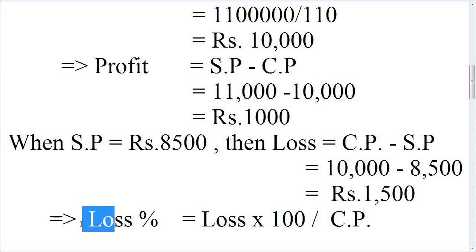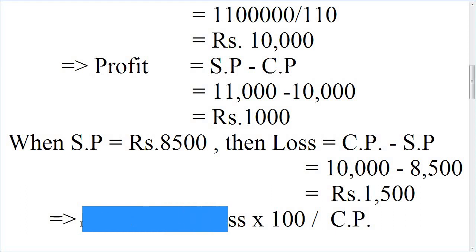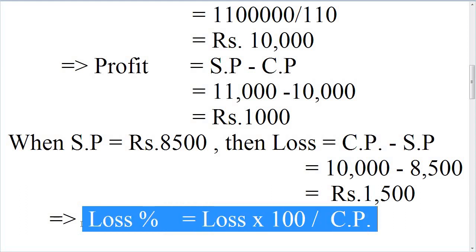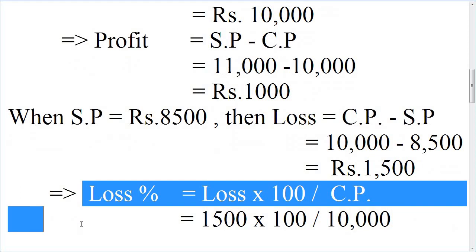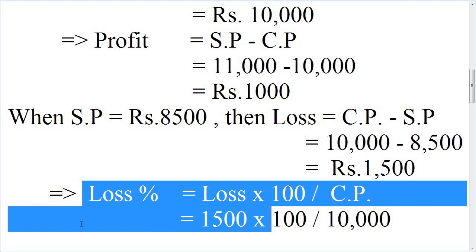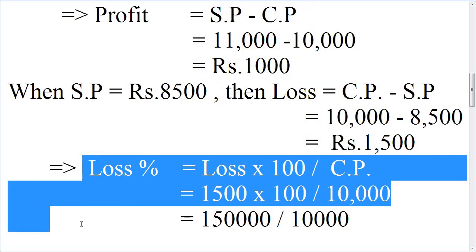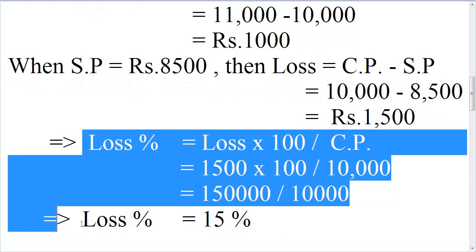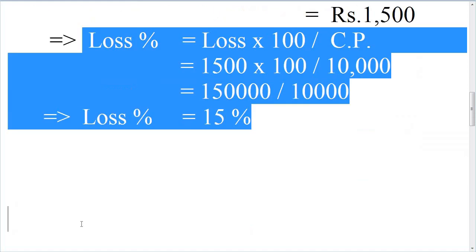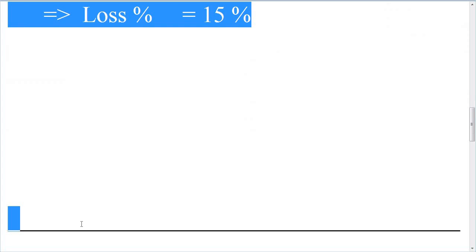The loss percentage formula is: Loss% = (Loss × 100) / Cost Price. So that is 1,500 × 100 divided by 10,000, which equals 150,000 divided by 10,000. The loss percentage is equal to 15%.